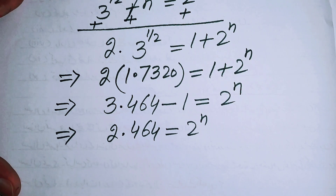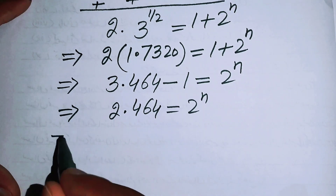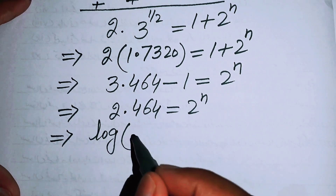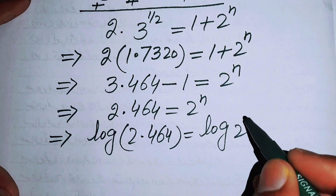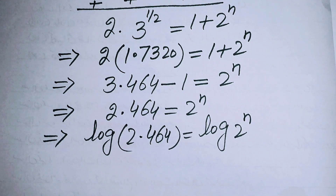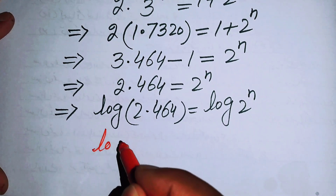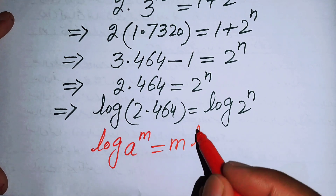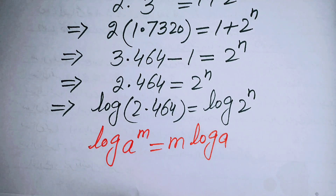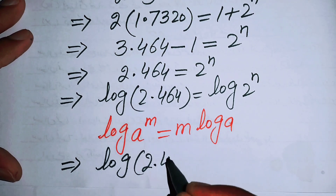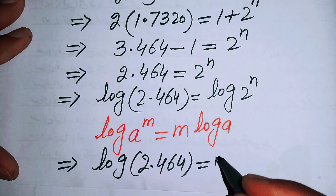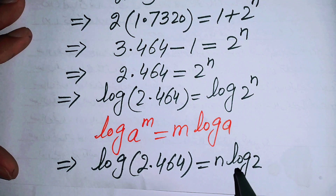Our goal is to find the value of n, so we take the log on both sides. This gives log of 2.464 equals log of 2 to the power of n. Using the logarithm property — log of a to the power of m equals m times log a — we rewrite the right side as n times log 2.